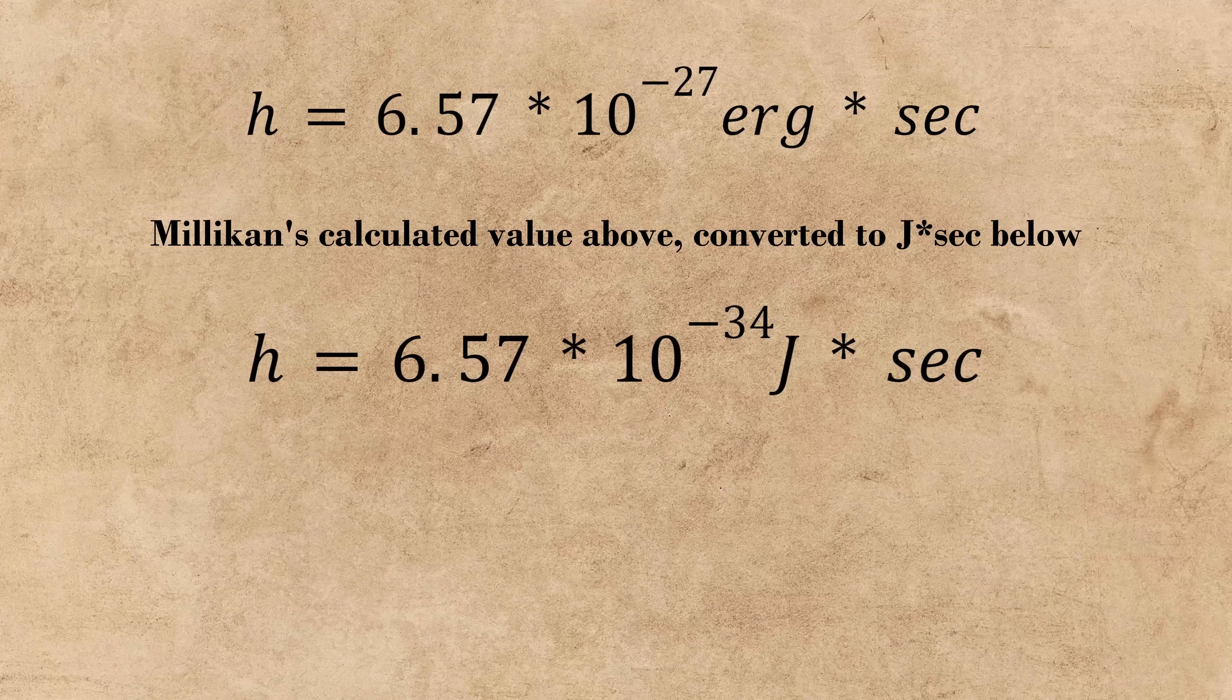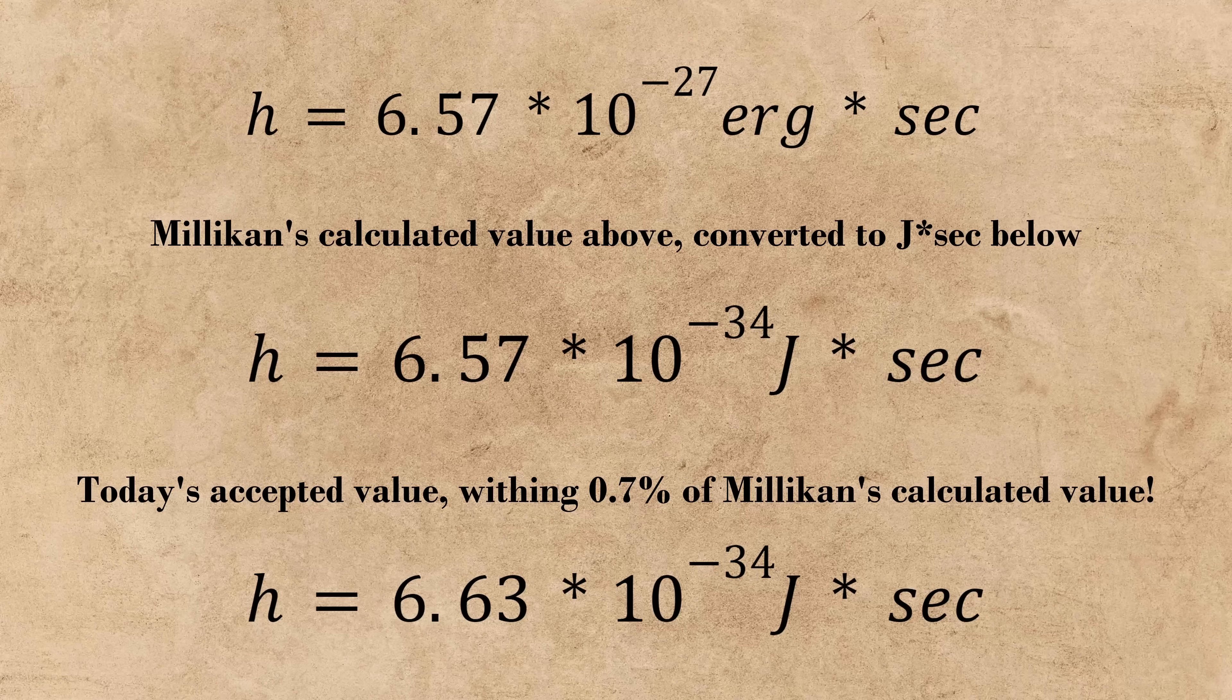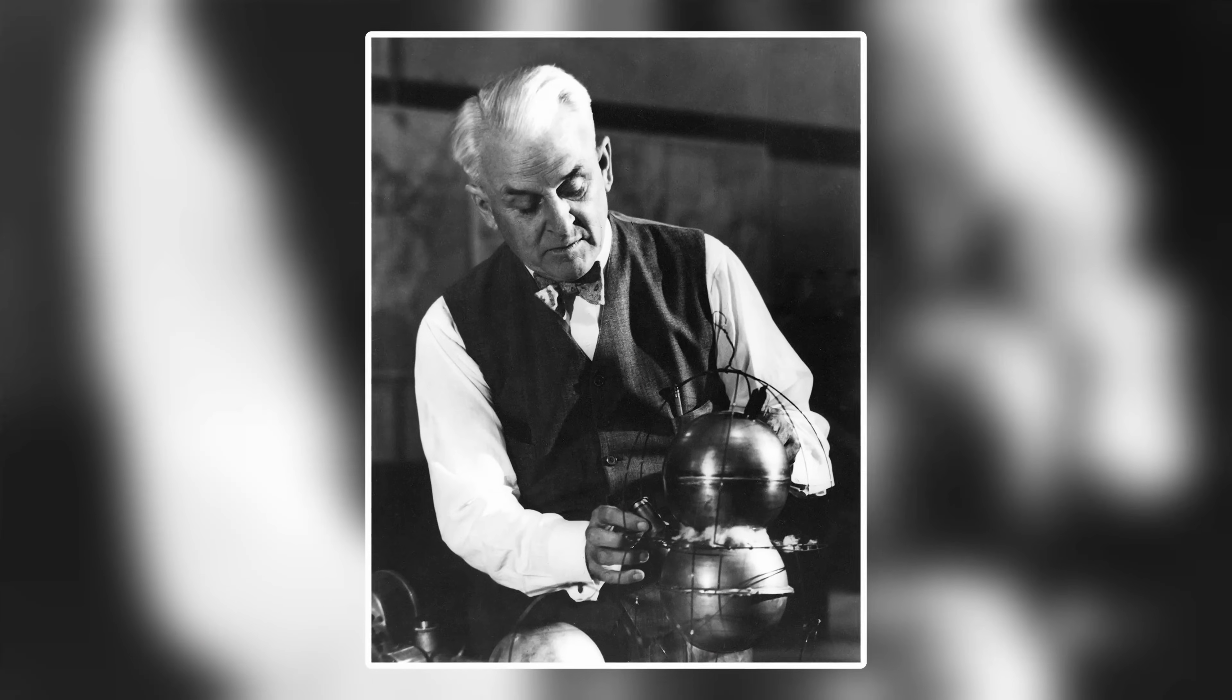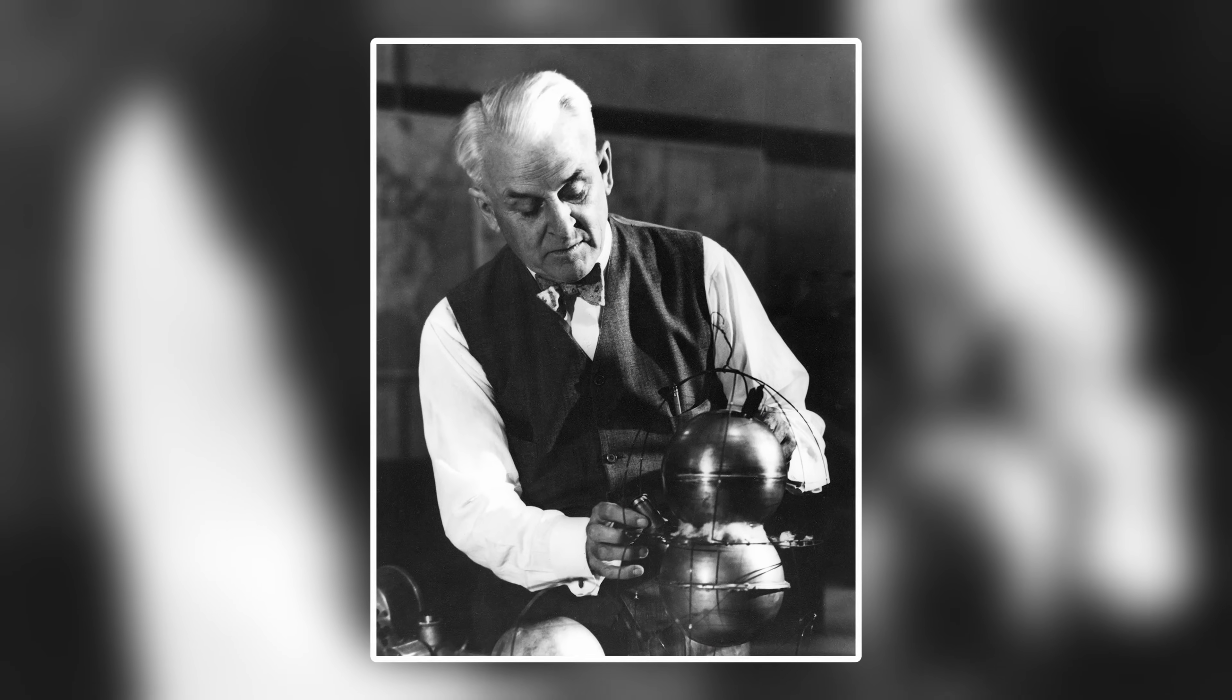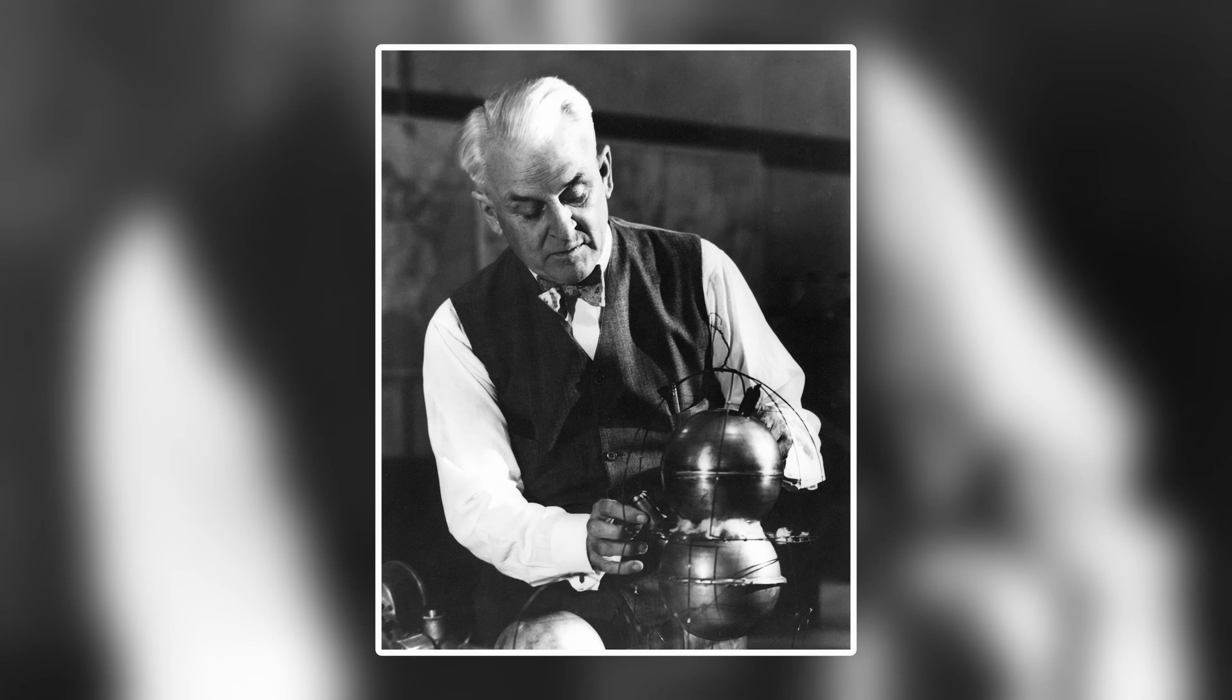His calculations were so precise, in fact, that his calculated value for the constant is still within 0.7 percent of today's currently accepted value. Even after all this experimental evidence, however, Millikan stood firm in his beliefs, swearing that Einstein was still incorrect, but through means that they did not yet understand.